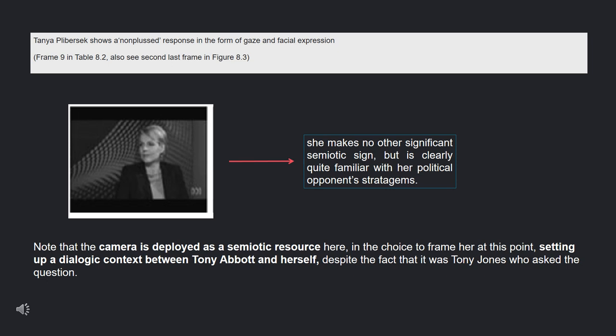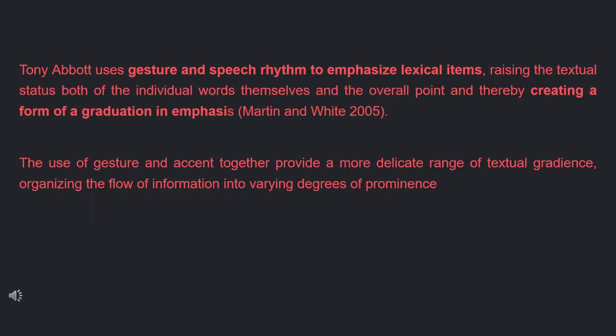Tanya Plibersek shows a non-plus response, where she is so confused that she doesn't know how to react — a form of gaze and facial expression seen in frame 9. She makes no other significant semiotic sign, but is clearly quite familiar with her political opponents' strategies. We need to remember that the camera is deployed as a semiotic resource here, setting up a dialogic context between Tony Abbott and Tanya Plibersek even though the one who asked the question is Tony Jones. Tony Abbott uses gestures — raising his hand with palm facing outwards — and speech rhythm or intonation when he says 'yes it is' to emphasize lexical items. His gestures and speech rhythm raise the textual status of individual words, thereby creating a form of gradation and emphasis.